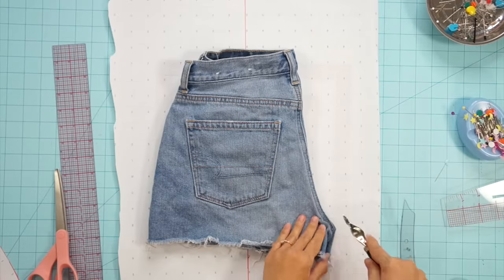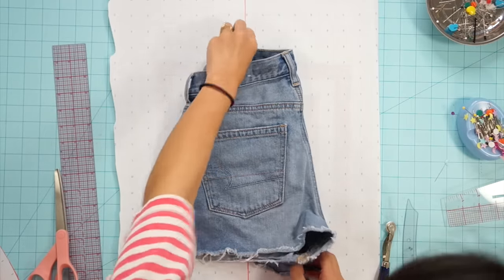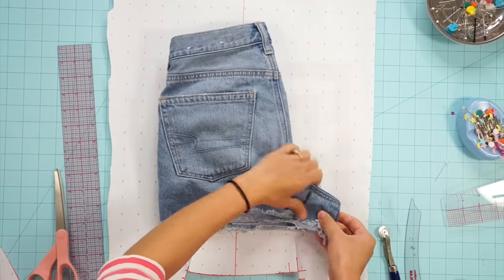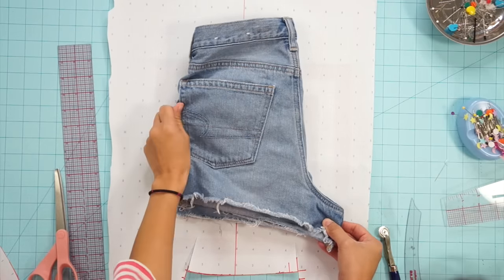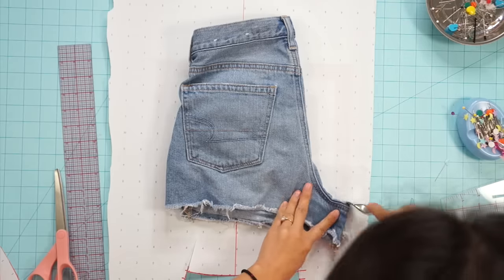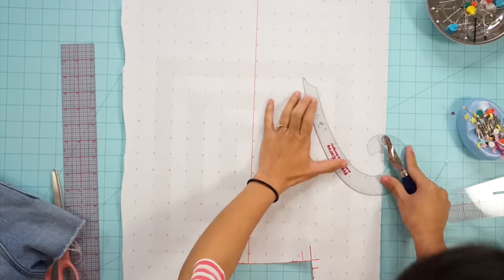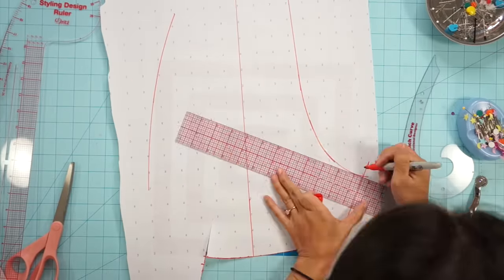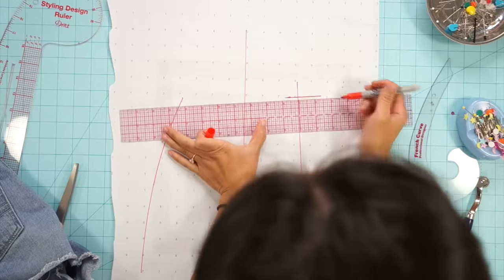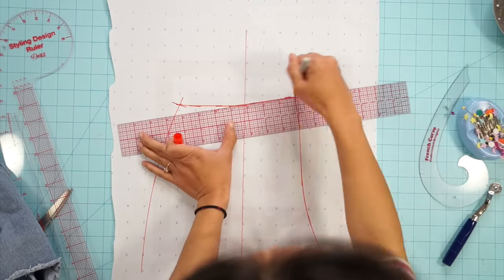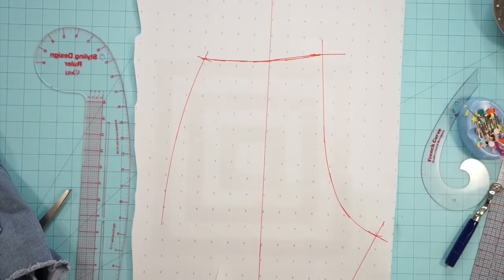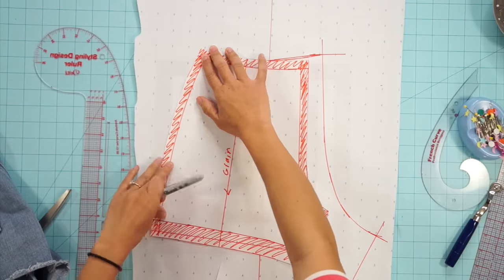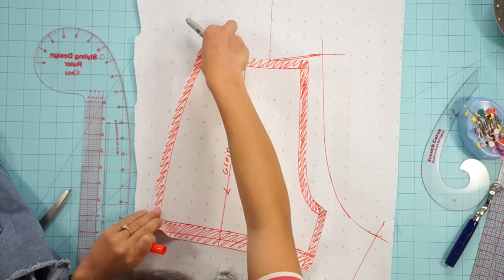Then I can pull out the inner leg and the rest of the crotch seam out and reline it up with the curve I already marked out and continue tracing it. To make sure my side seams and inner leg seams are the same length I just lay the front pattern piece on top and transfer the marking.